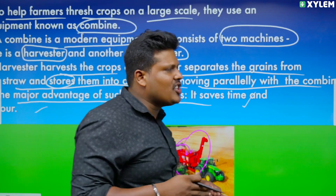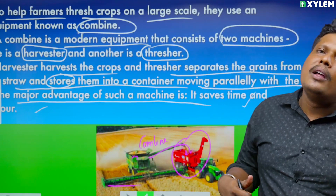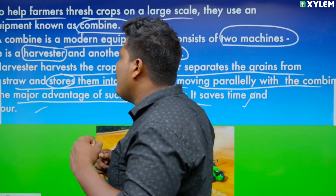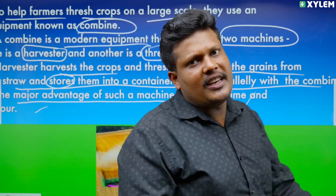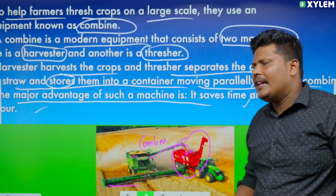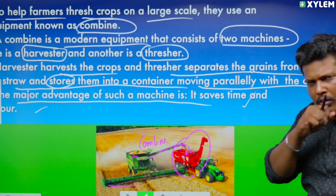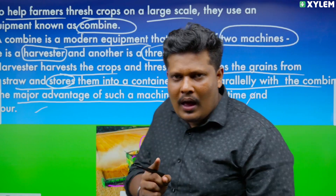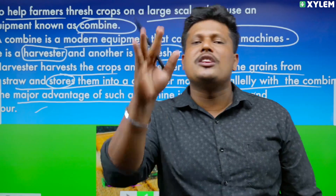So the machines are fast to work. So, combine handles both the harvesting and threshing.